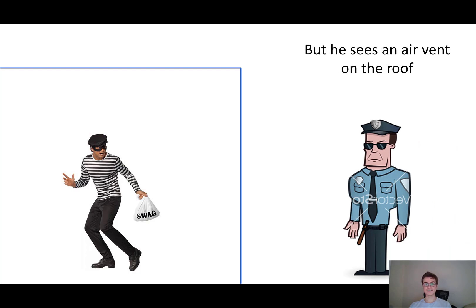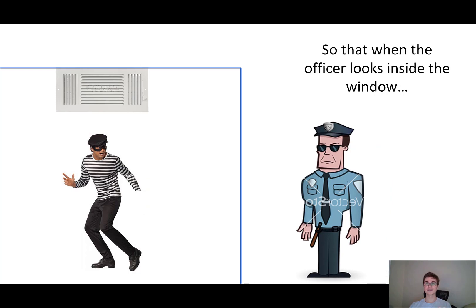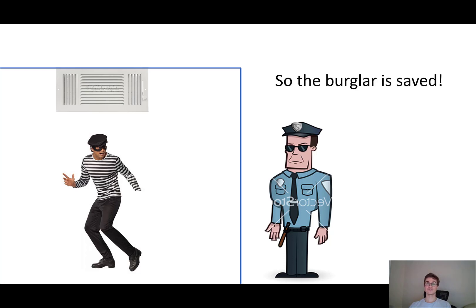And he looks and he sees an air vent on the roof. And he decides to hide his stolen loot in the air vent. So he throws it up. And when the officer looks inside the window, he sees nothing suspicious. There's no bag of money. There's just a perfectly ordinary guy in striped pajamas in a bank at night. So the burglar is saved.